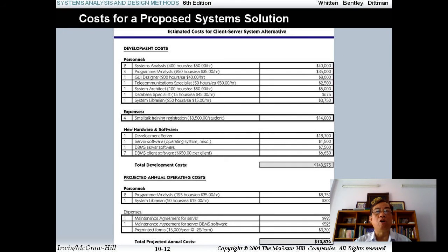Now you see here is a cost of proposed system. You see an example here. You see the development costs, personnel expenses, for the hardware, and projected annual operating costs. You have the development costs, then operating costs, the costs to maintain in order to maintain the operation of your system.